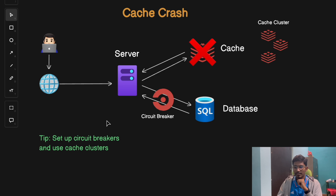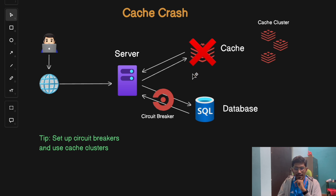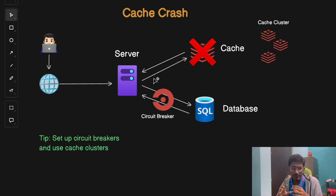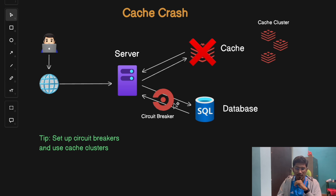The final problem is the Cache Crash — when your entire cache server goes down. Every single request now goes straight to your database, and if the database is already under load, managing the huge traffic spike becomes very difficult. To handle this, you can incorporate a circuit breaker in front of the server, which stops sending traffic to the database altogether when the cache is down.